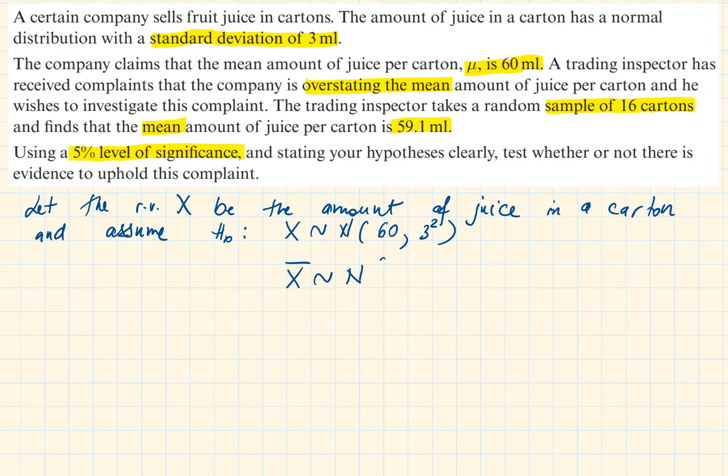Therefore, the sample mean is also normally distributed with mean 60, which is the same as the population mean. However, the variance will have to be divided by the total sample size.